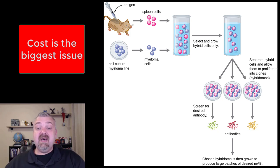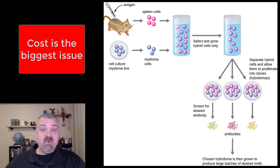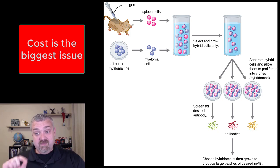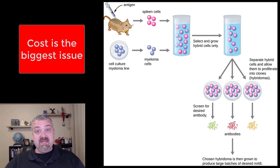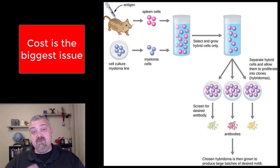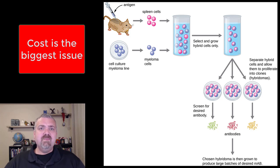So that is monoclonal antibodies and some of their uses. In the future, I think anytime you want to find a lock, you should be able to produce the key to go after it. You're going to see a lot more drugs and diagnostic tests. I'm also excited about some of the new uses with cancer therapies, where they can hopefully send in these antibodies to find specific antigens on cancer cells. The sky's the limit as far as how these are going to be used. I hope this helps. Have a wonderful day. Be blessed.